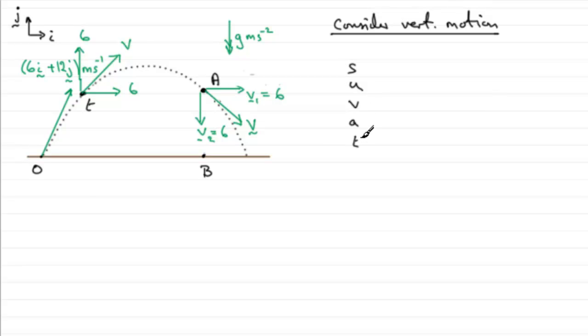We know that if we take upwards as positive, don't worry about s, let's just have a look at u. U, the initial upwards velocity, was 12 meters per second. V, we know the final one has got to be six. The acceleration acts downwards, minus g, so that's going to be minus g or minus 9.8, and t is what we're trying to find.